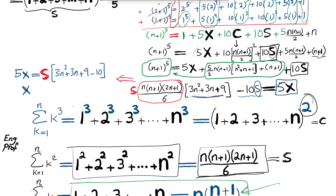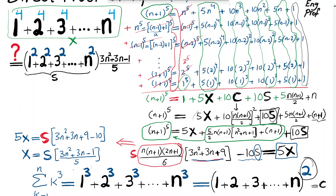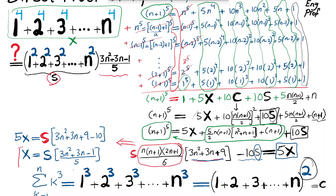Very nice. Therefore I get x — which is the sum of integers to the power 4 — equals s times 3n squared plus 3n minus 1, divided by 5. That's exactly what I wanted to find. If you look at what we were chasing at the start, we were trying to prove that x equals s times 3n squared plus 3n minus 1 divided by 5, which is exactly what we just showed. We are done.